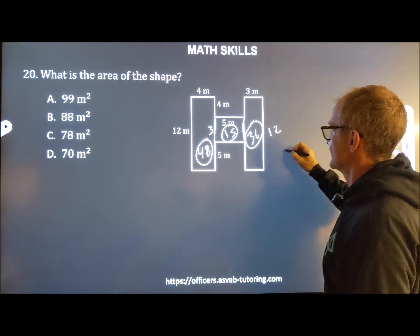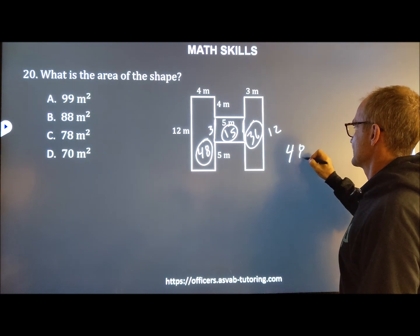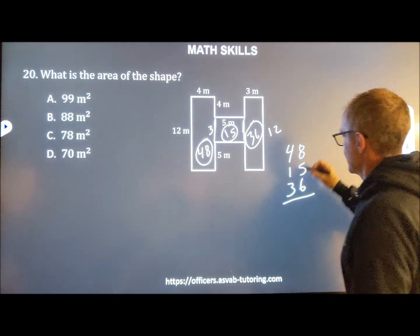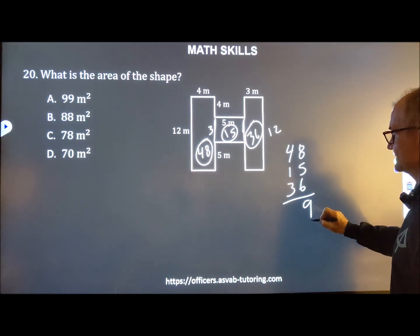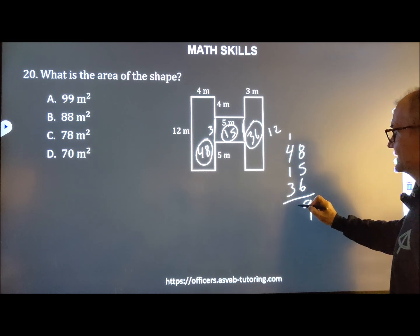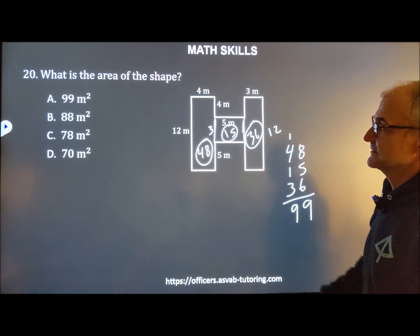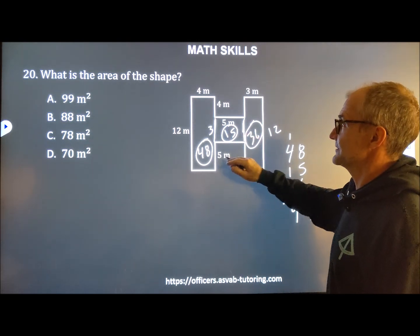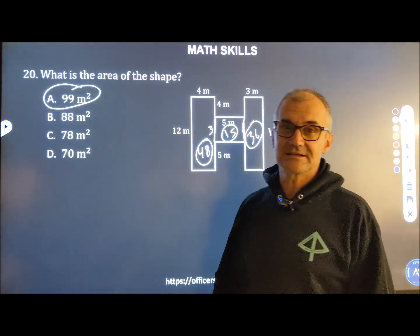And we're going to add those all together. 48, 15 and the 36, 14, 19 carry the 1, 5, 6, 9, 99. And when the units are meters, we're doing meters times meters, square meters. And there's answer A right there.